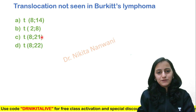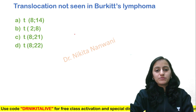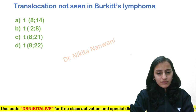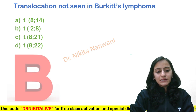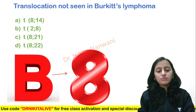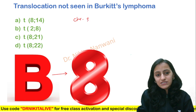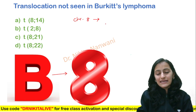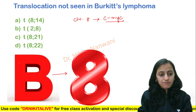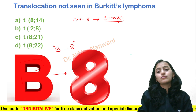The common thing you see in the options is involvement of chromosome 8. So the first trick to remember: what is the gene affected in Burkitt's lymphoma and on which chromosome is it? Burkitt's starts with B, and B looks like the number 8. So remember, in Burkitt's lymphoma, chromosome 8 is constant because the gene affected on chromosome 8 is the CMYC gene. The alphabet B looks like 8, so Burkitt's is chromosome 8.